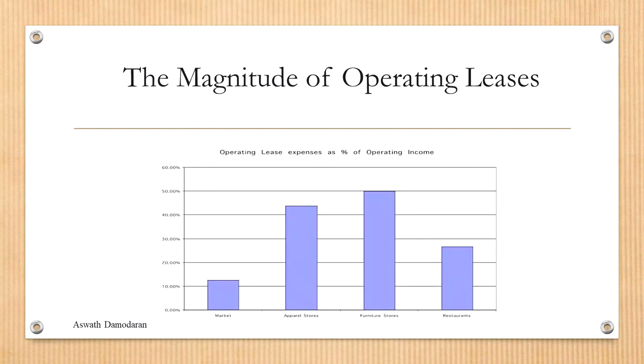The magnitude of operating lease is tremendous for certain businesses such as restaurants and furniture stores. The percentage of operating lease relative to operating income can be as high as 50%, and on average more than 10% of operating lease items are treated as off-balance sheet items. It's a very important and very common item, so we have to do this operating lease treatment when performing earnings adjustment.